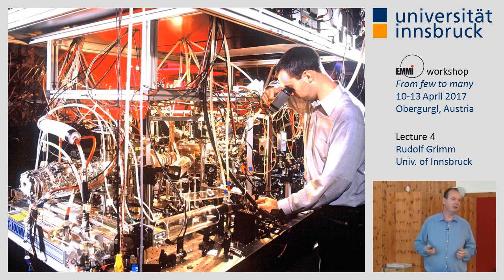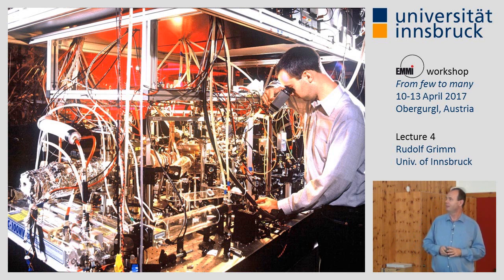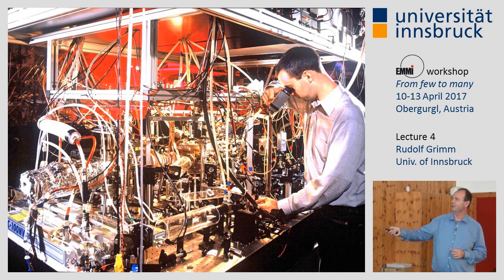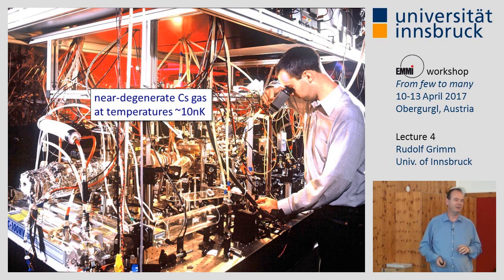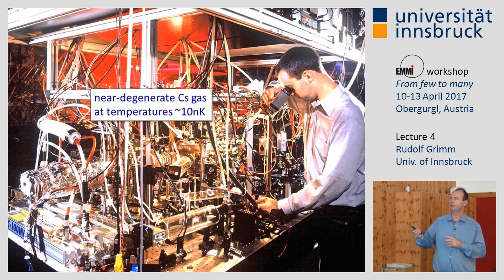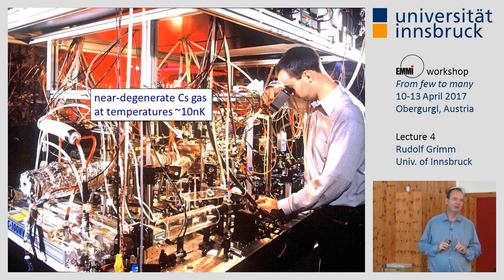As an experimentalist, you need a lab with many components. This is our first cesium lab, where we observed the Efimov states. Somewhere in the center of this setup is a vacuum chamber where we can produce cesium atoms in a near-degenerate gas at a temperature of 10 nK — sometimes even below, down to 4 nK.